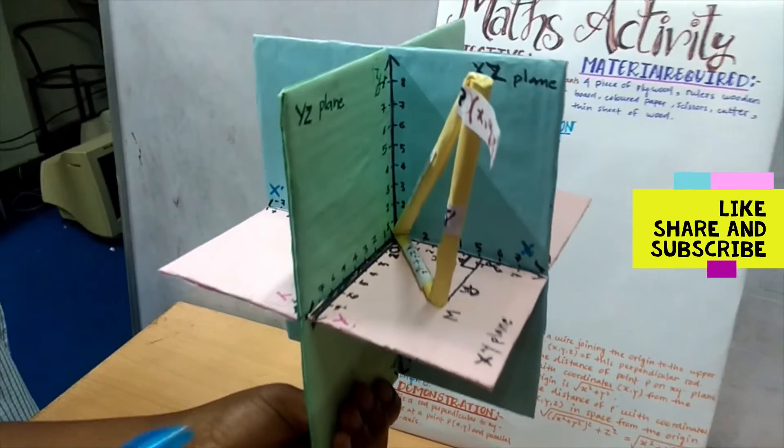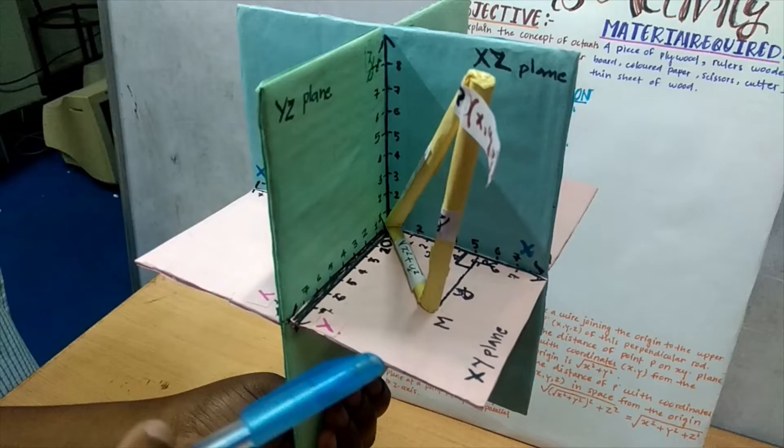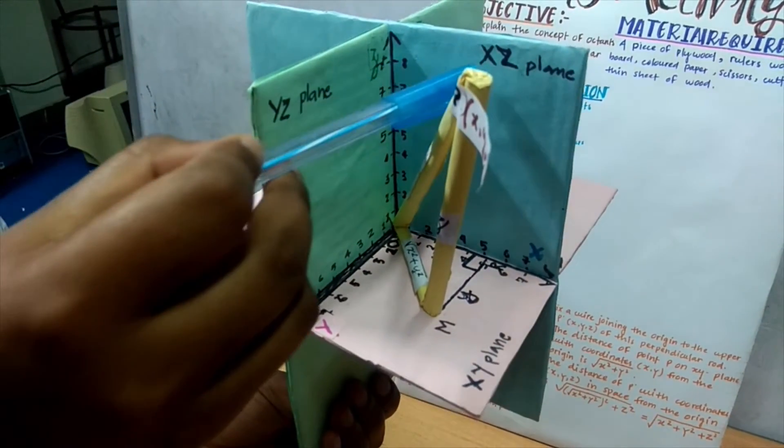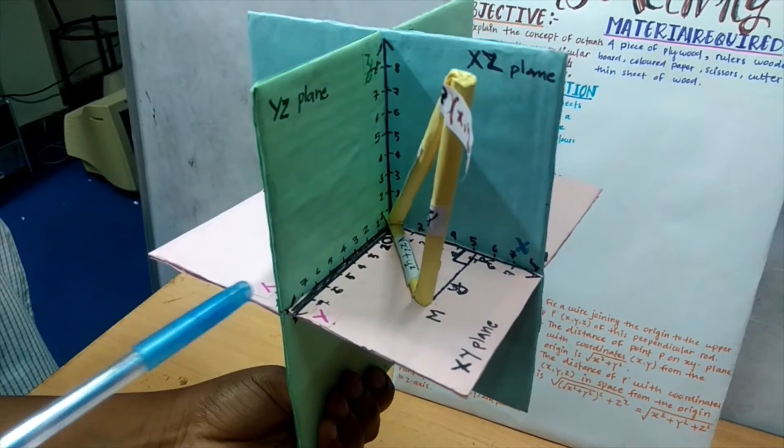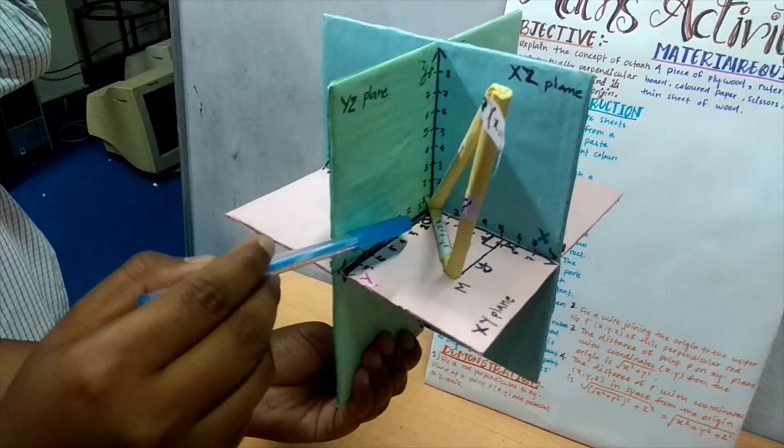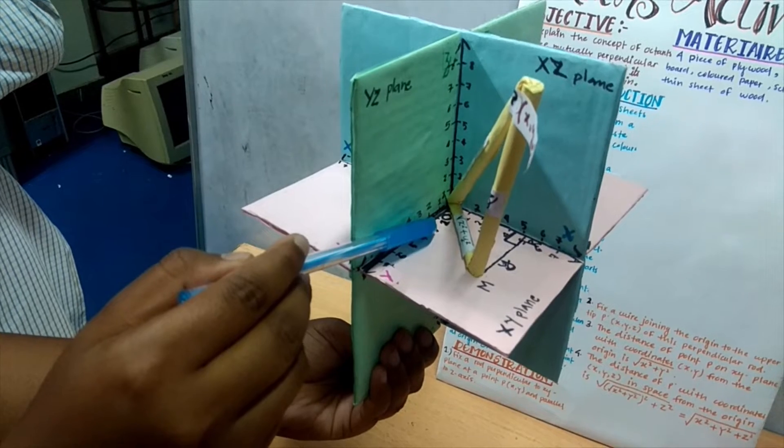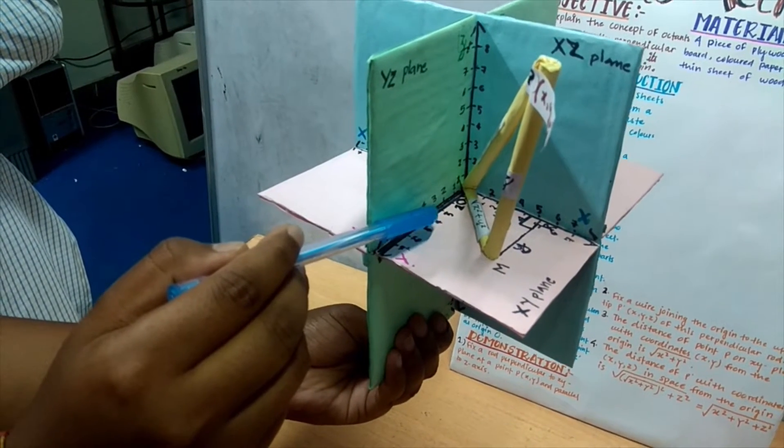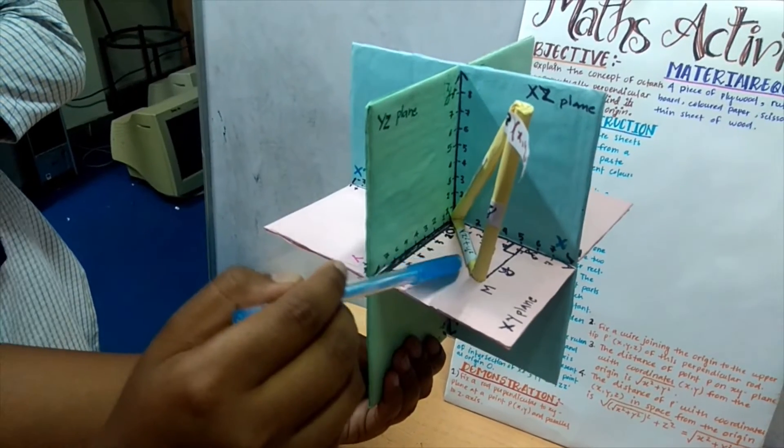If three planes intersect at O such that XY, YZ, and ZX plane, then it makes octant. This point O is known as origin and the three coordinate planes divide the space into eight parts known as octants.